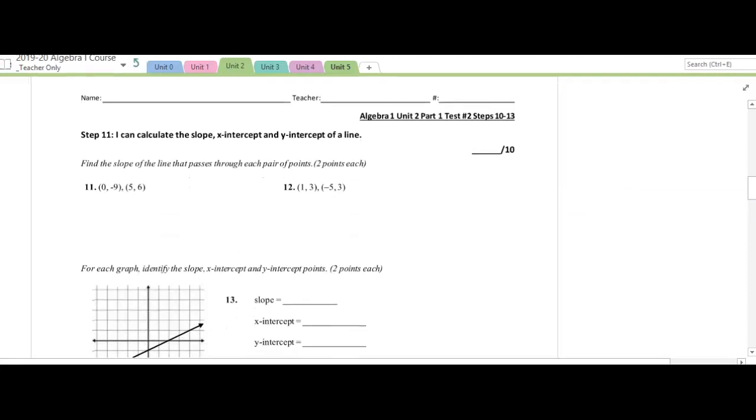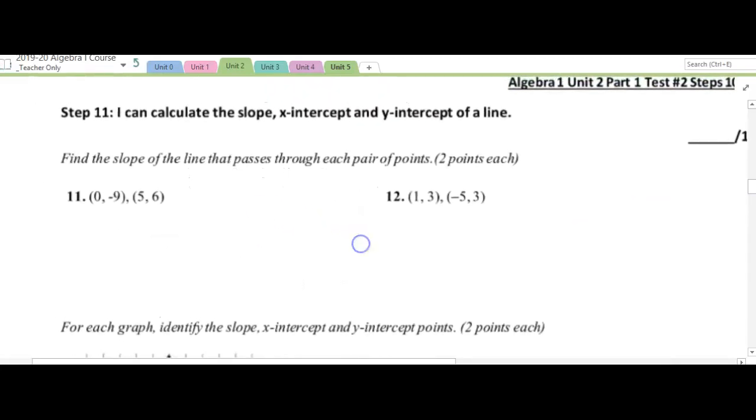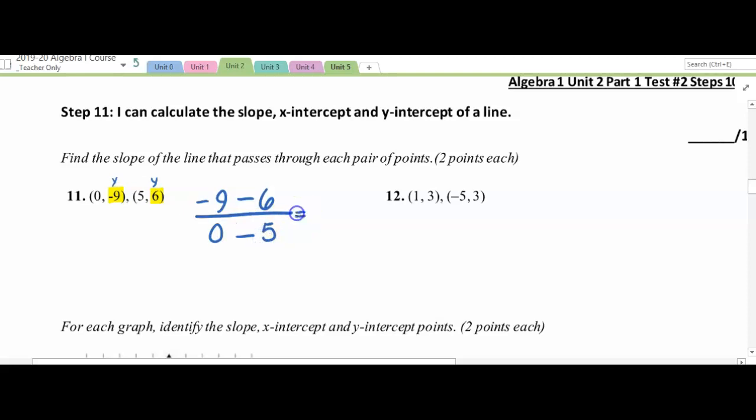The next topic is calculating slope, x and y intercepts. To find the slope, I'm going to begin with my y values. And I'm going to subtract them. Negative 9 and 6. Then I'm going to drop in my x values on the bottom, which gives me negative 15 over negative 5, which is 3.